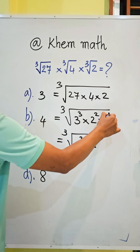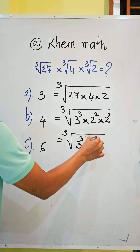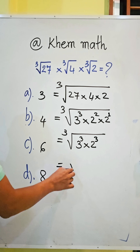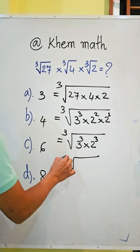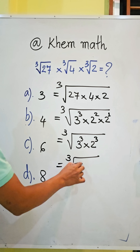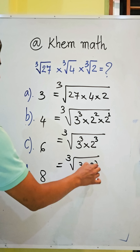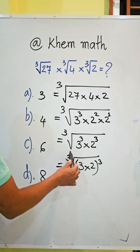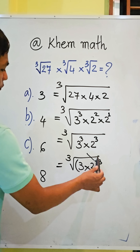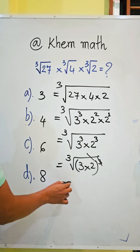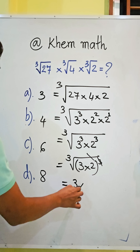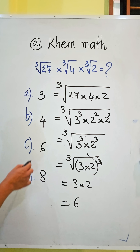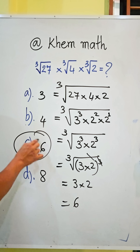Adding the exponents: 2 plus 1 equals 3. We see the same base, so we get the cube root of (3 times 2) all to the power 3. Now we simplify — the cube root cancels with the power 3 — and we get 3 times 2, which equals 6. So our answer is C.